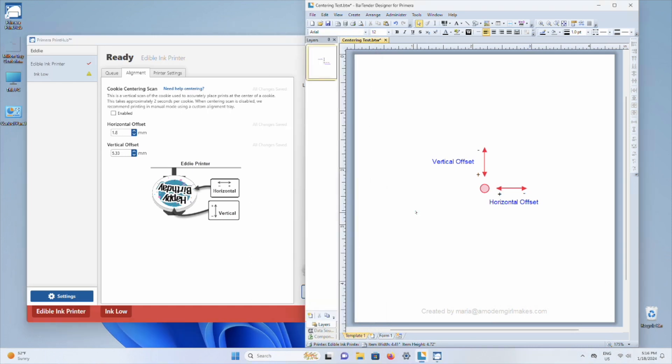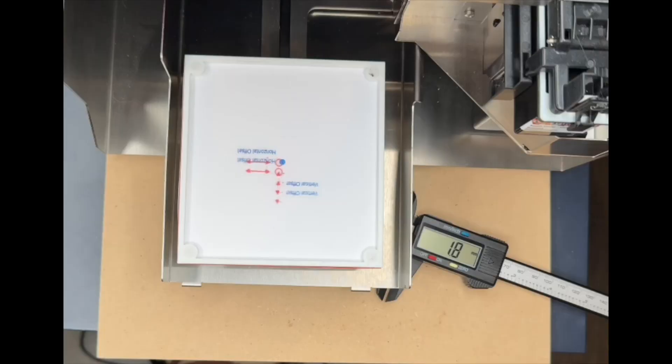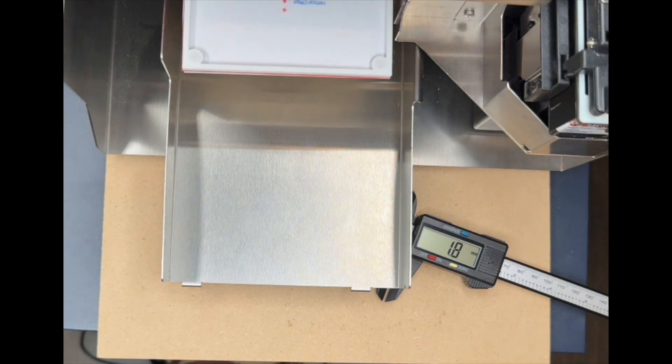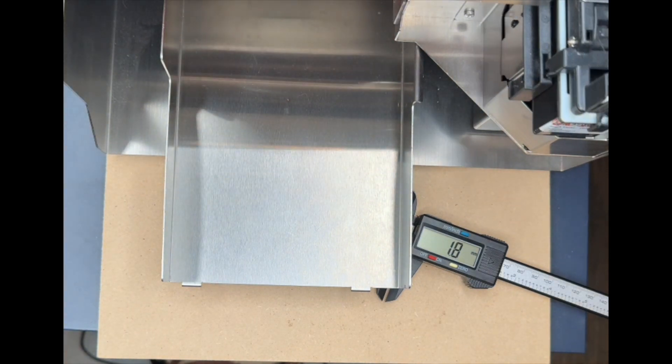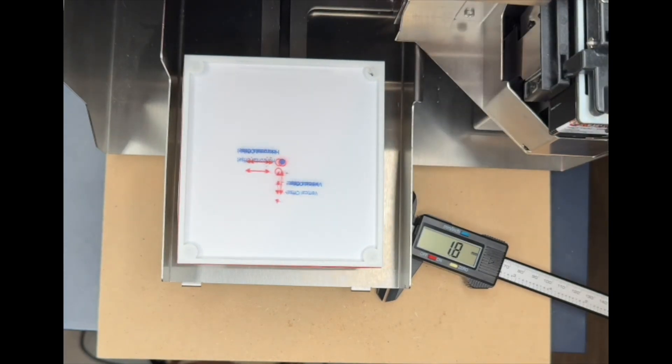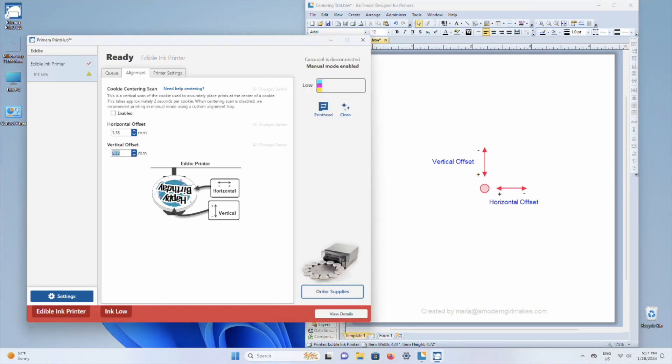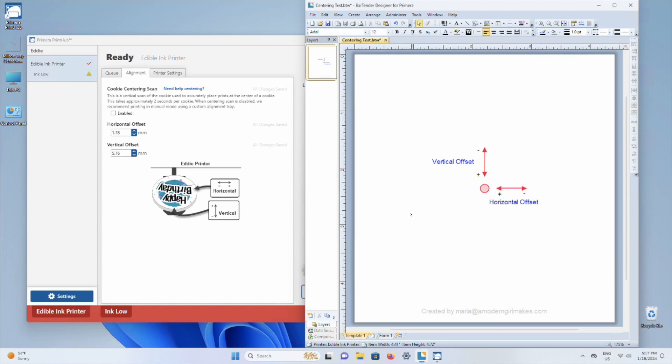All right. One more test print. And if this paper gets too written over, well, just use another one until you get it exactly where you want it. I think if I go down on the vertical a little bit, so increase the number a little bit on the vertical, I will have nailed it. So I'm going to change this. I need to increase the number. So 5.75. And test print.